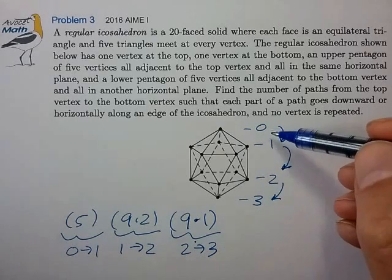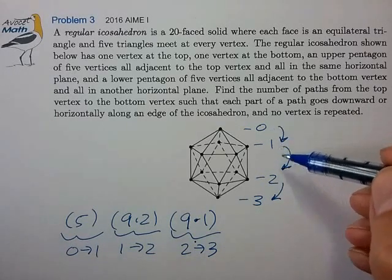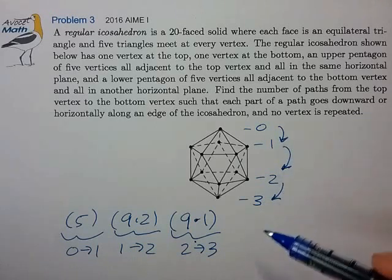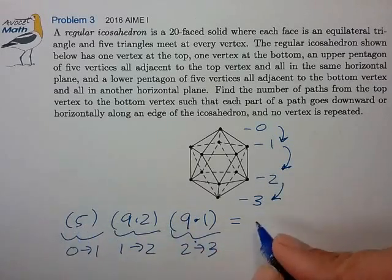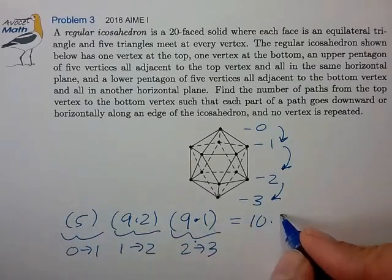And it looks like these processes, or at least the number of ways to get from zero to one, one to two, two to three is independent, so we can just multiply these numbers to get the total number of ways. Two times five is ten, nine times nine is 81.